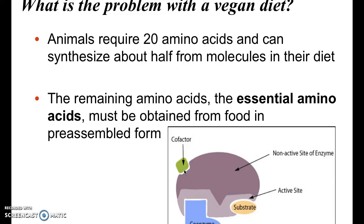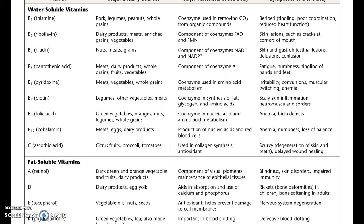Cofactors predominantly do the same job of maintaining the shape and integrity of the enzyme itself, but cofactors are usually minerals — it could be iron, calcium, or a whole bunch of different things. Coenzymes are organic molecules. Here is the list of all your different types of vitamins — fat-soluble and water-soluble vitamins.